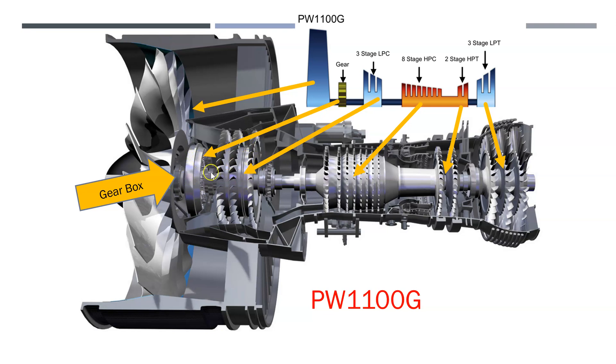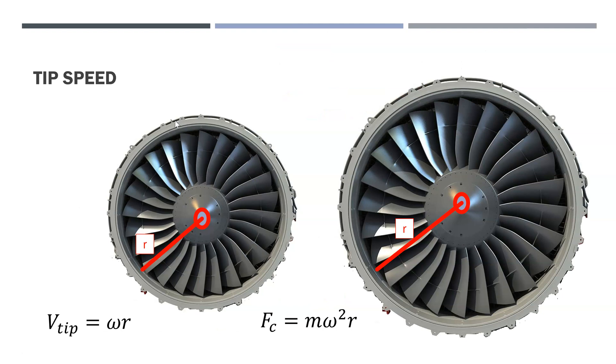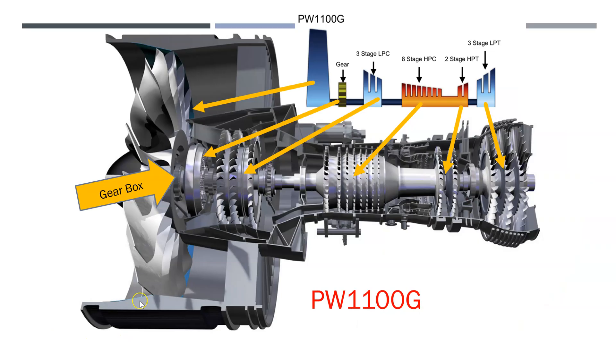So whatever the RPM was, it is reduced here in the gearbox, allowing us to go back. So if the RPM reduces, then this reduces the tip speed, allowing us to have a larger radius.